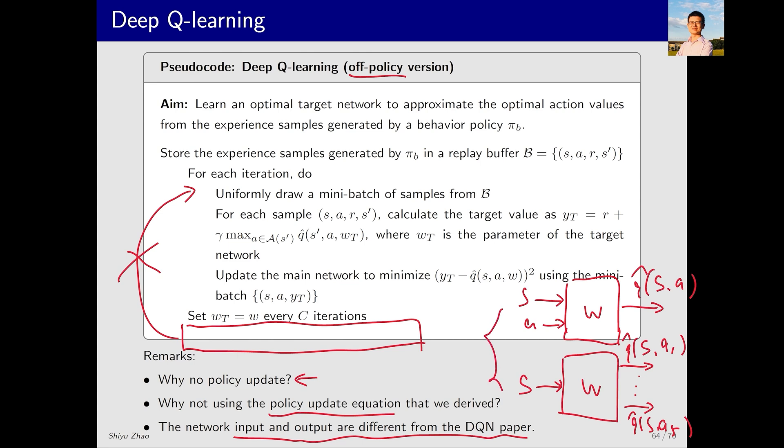What's the difference between these two neural networks? In our case, if you want to calculate the q-values for five different actions given a state s, you need to input s with each of the five actions separately into the network. That means you would have to run the network five times to get q-hat(s,a1), q-hat(s,a2), and so on, and then determine which q-value is the largest.